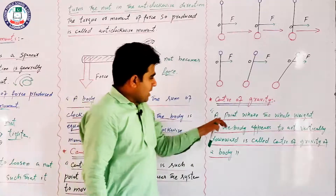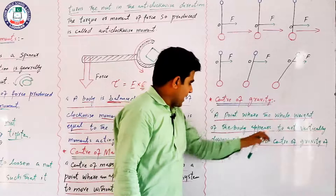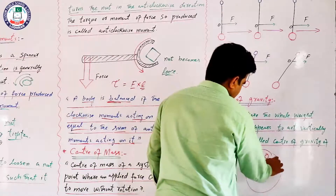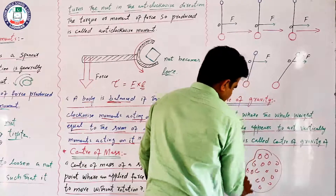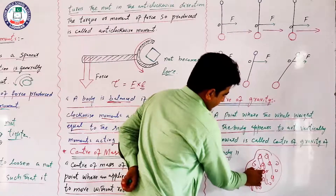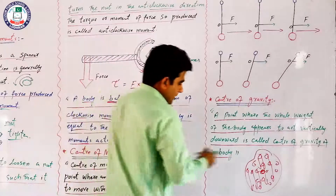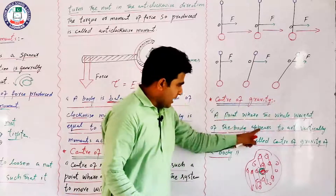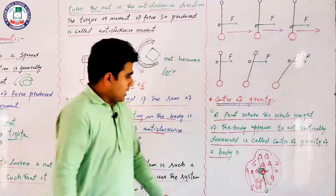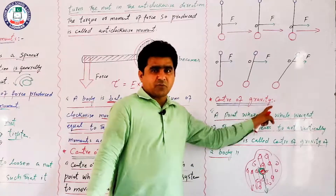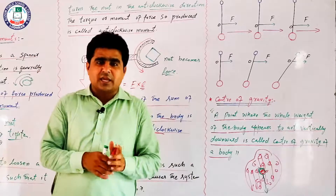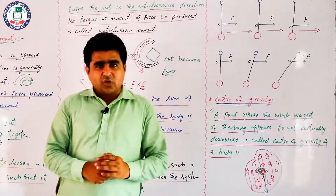Center of Gravity: A point where the whole weight of a body appears to act vertically downward is called center of gravity। किसी body में number of particles होते हैं, हर एक का weight downward direction में होता है। वो point जहां सारा weight vertically downward act करे — उसे center of gravity कहते हैं। इनकी proper definition याद करें, explanation read करें, और solved examples भी solve करें।